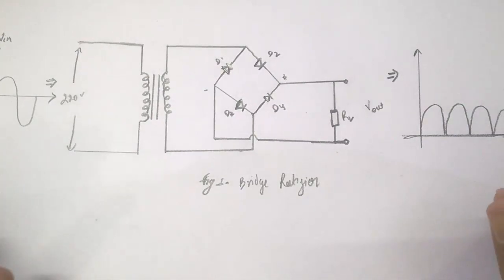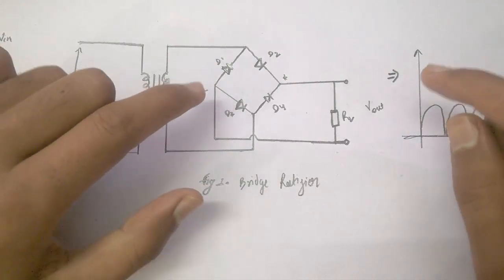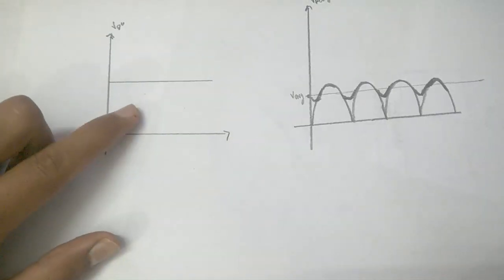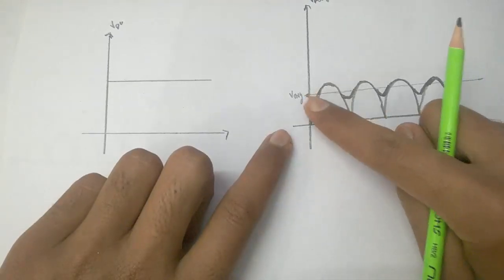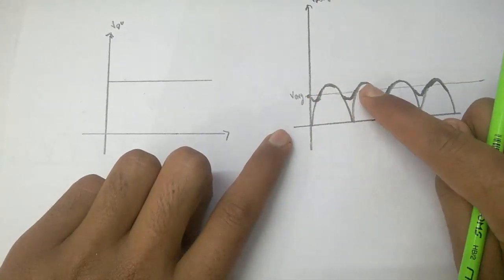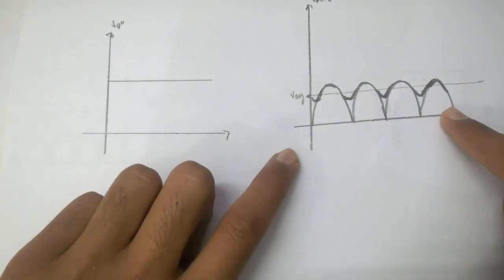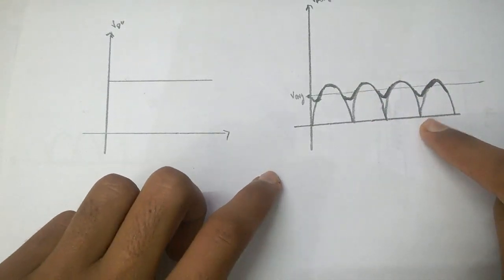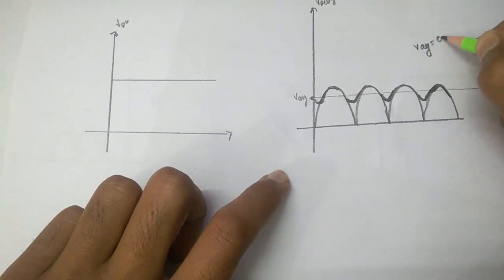The input is given to two ends of this network and the rectified output is taken from the other two ends. For practical use, we always require a constant DC, but what we get is a waveform which is constantly changing — it is not constant. This means we consider it as an average DC, which is 0.6 times the peak value.